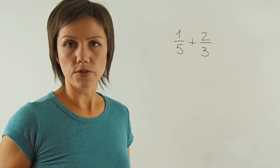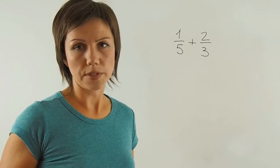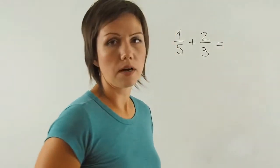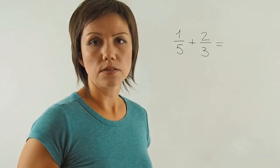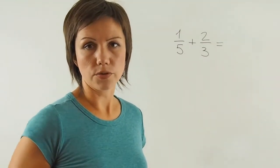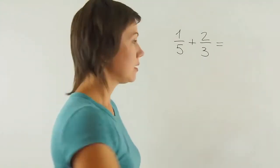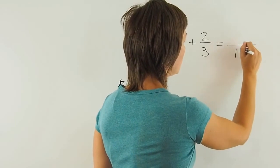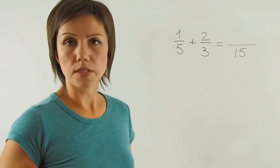In order to add two fractions with different denominators, I need to first find the lowest common denominator. To find the lowest common denominator, I need to find the least common multiple of the two numbers at the bottom, 5 and 3. The lowest common denominator is 15.